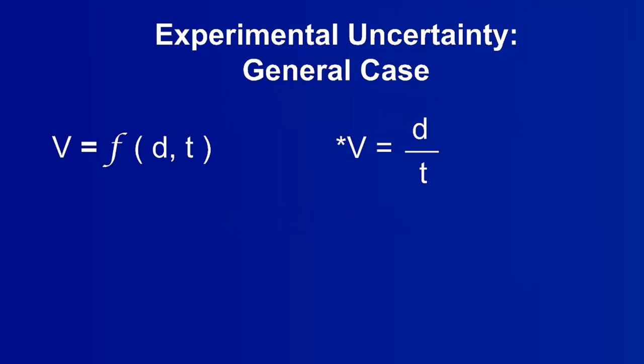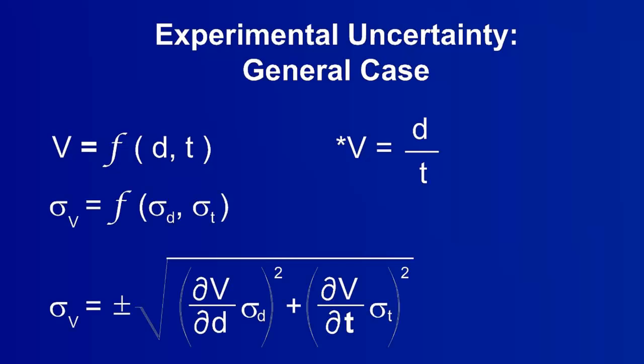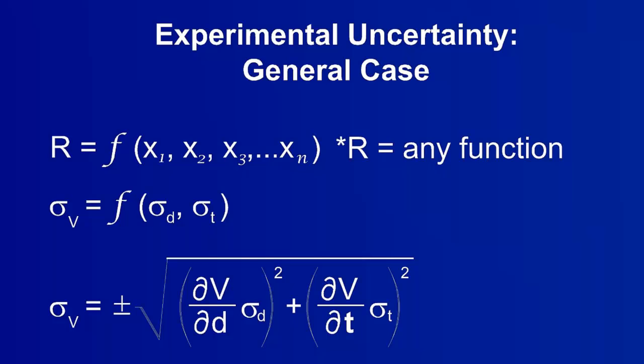Many of these uncertainty calculation equations have been shown specifically for this example. Let's expand these equations to include any general case. The resultant, r, is a function of variables x sub 1 through x sub n. This may be any function with any variables.